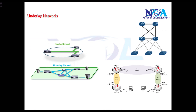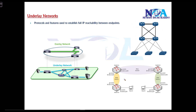Underlay networks relate to the protocols and features used to provide end-to-end IP reachability between two endpoints. For example, a server on one side and another server on the other — we need to make sure any two devices in the network have reachability between them. That is the main purpose of the underlay: providing end-to-end reachability between devices.